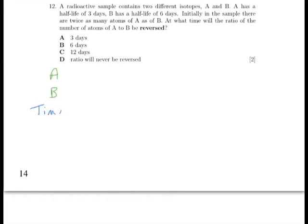Now, we'll start with time 0. We don't know the exact number of atoms for either sample, but we do know there are twice as many of A as there are of B. So let's just put a number on it. Let's say there are 200 atoms in sample A and 100 atoms in sample B.